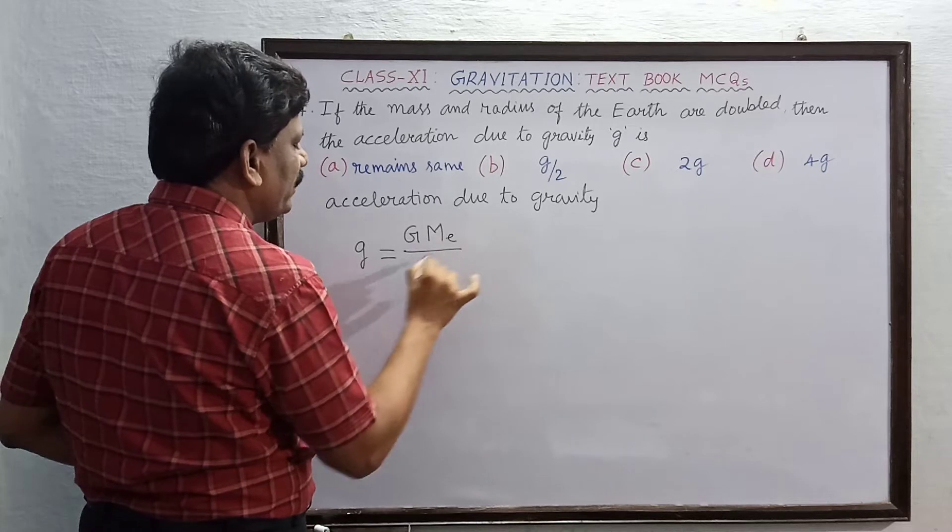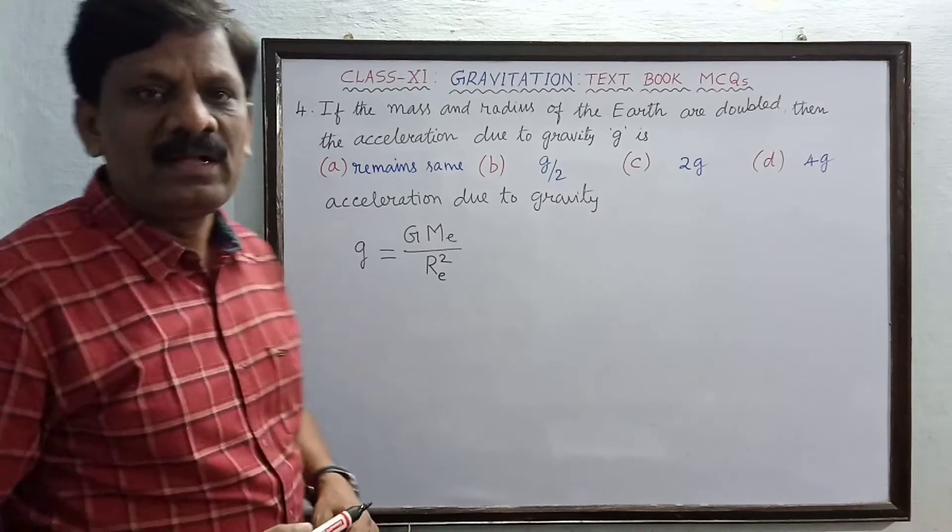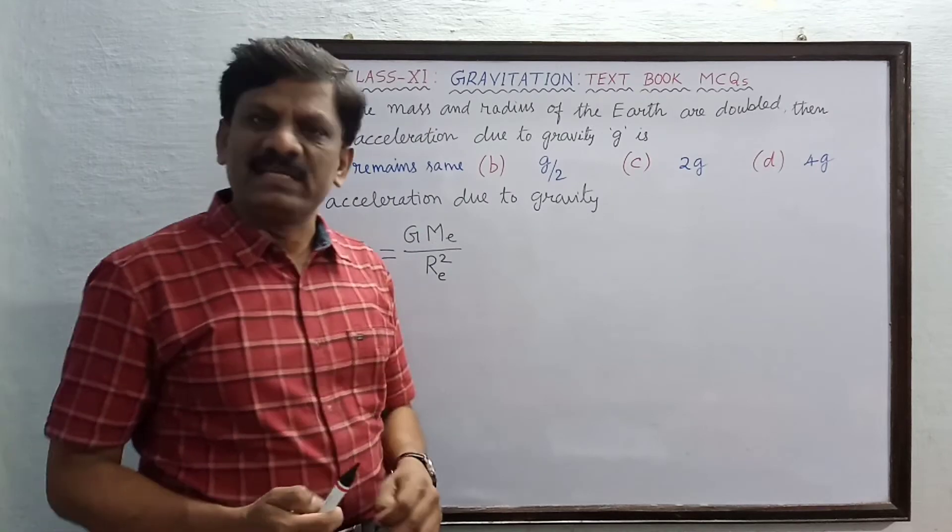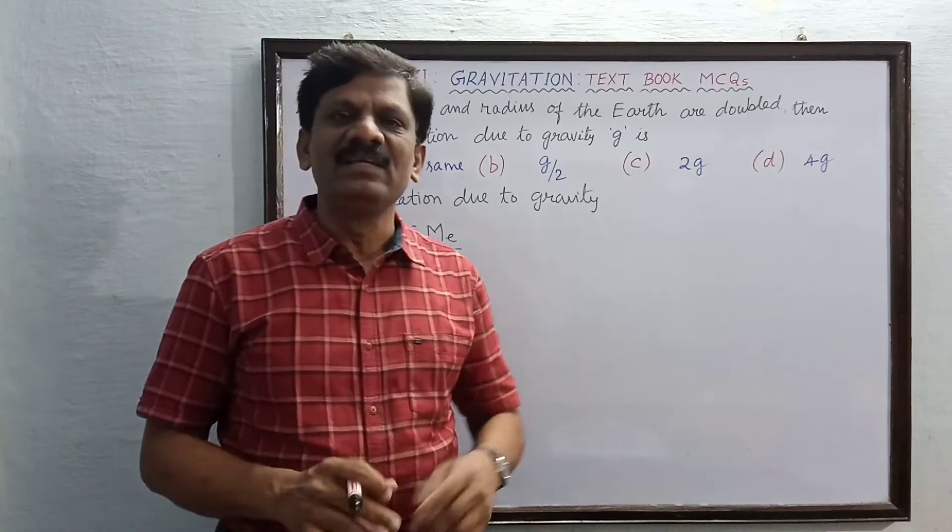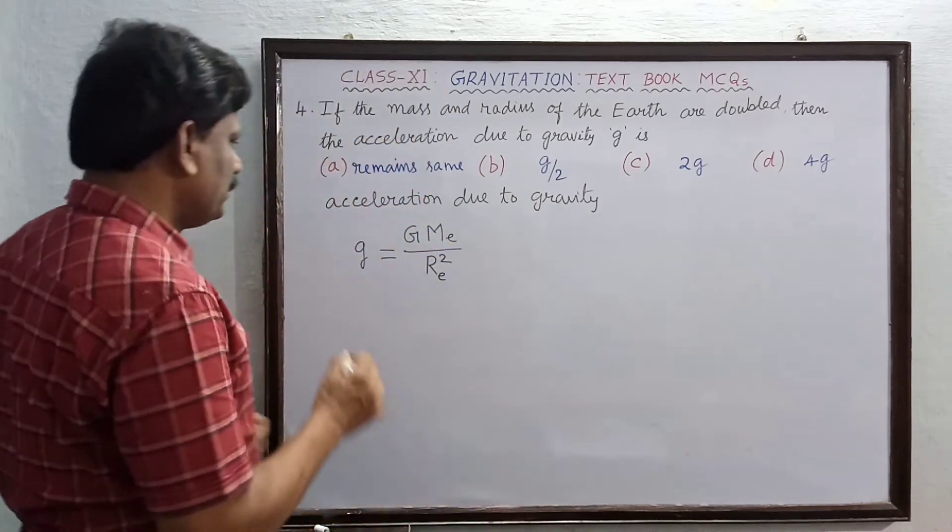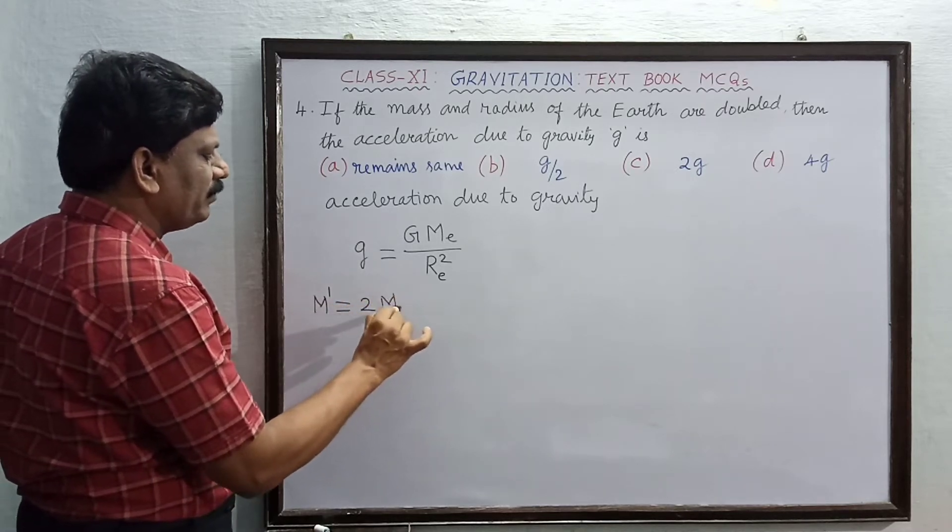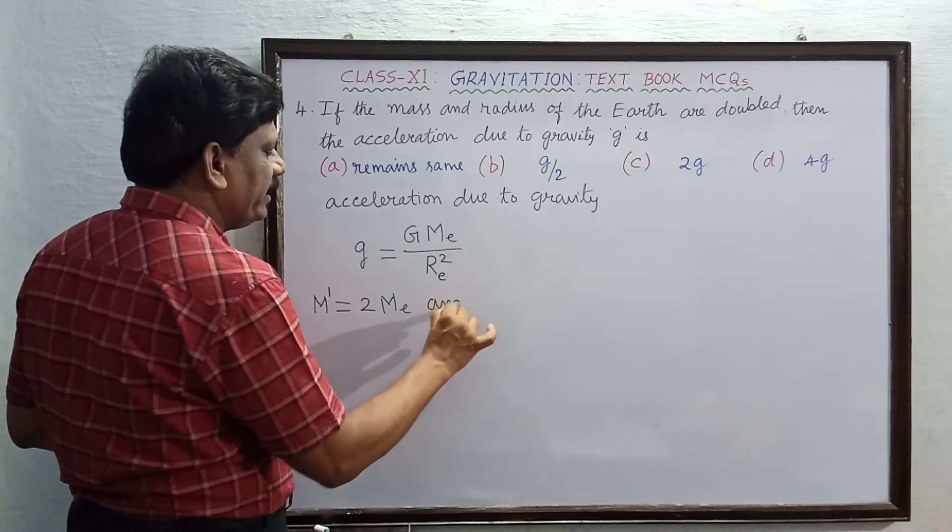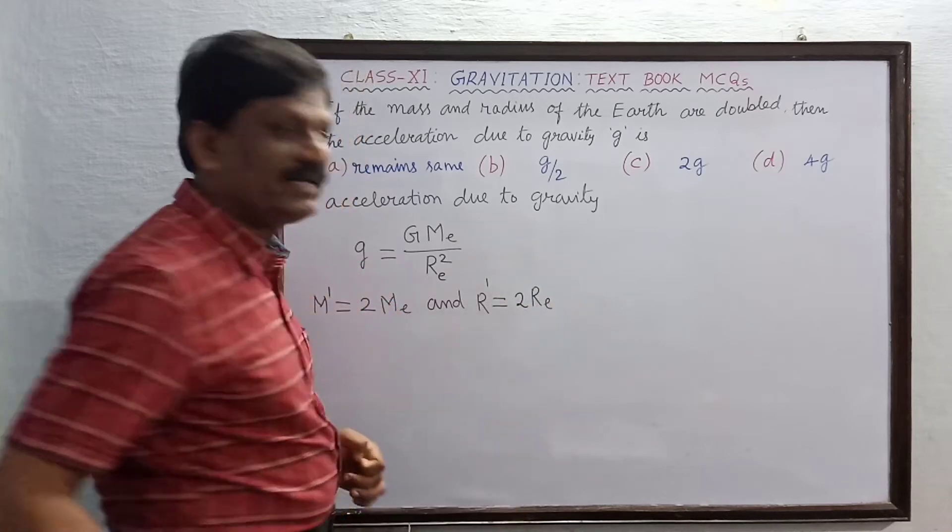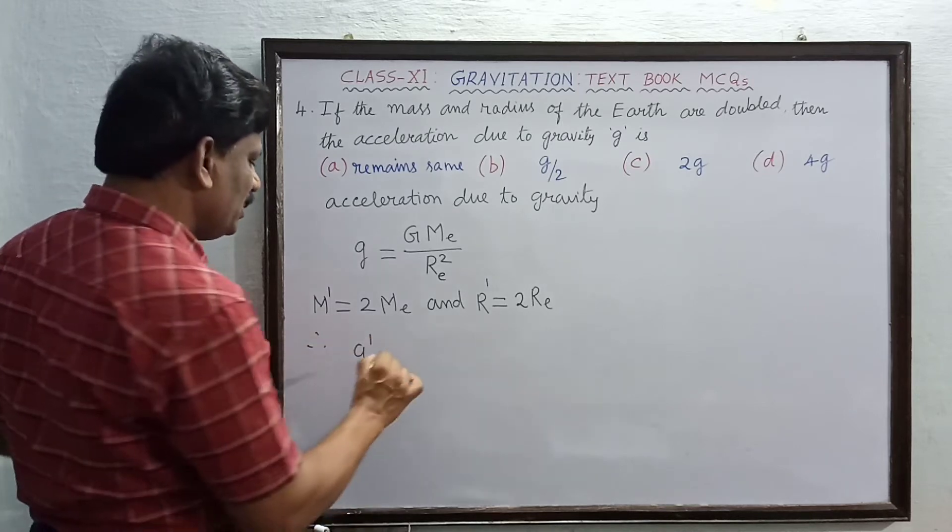GM by R square. M dash is equal to two times ME and the radius, new radius R dash is equal to two times the radius of the Earth. I am going to substitute.